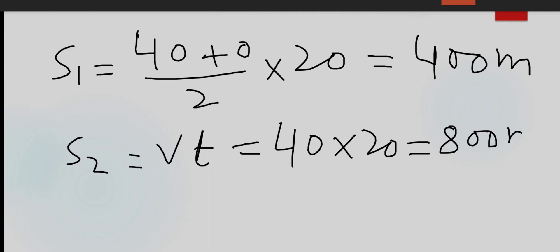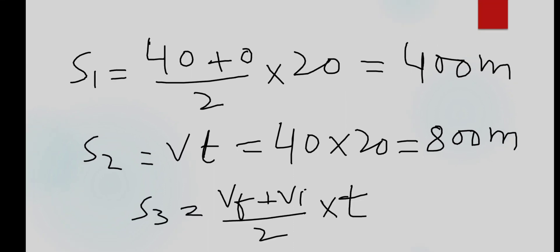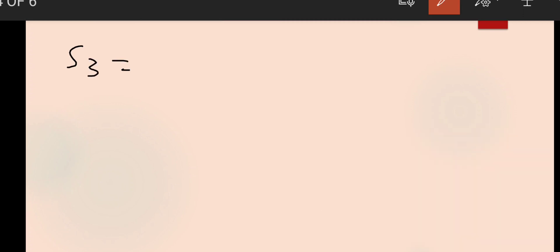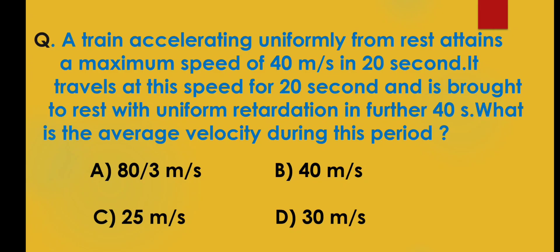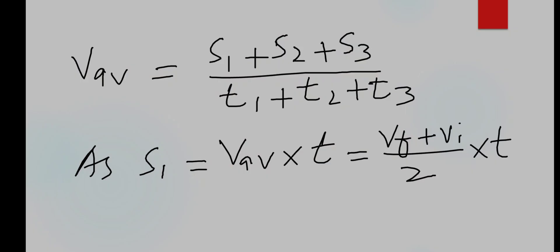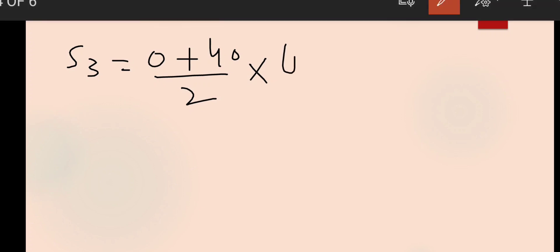So S2 we have obtained. Now we will calculate S3. So S3 is equal to VF plus VI upon 2 into T. Here VF is 0 and VI is 40. So by putting the values, S3 is equal to VF is 0 and VI is 40 upon 2 into time, time is 40 seconds.